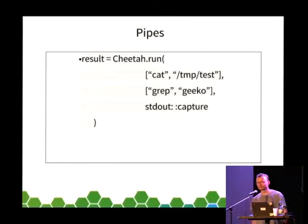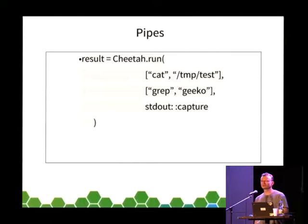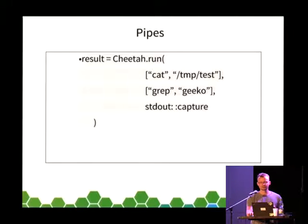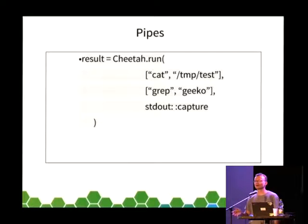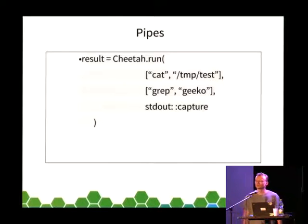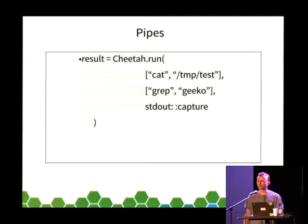Regarding standard error: by default we have logging, which I'll talk about on the next slide, so standard error is logged. If you don't want to capture it, it's not written to your return value. But if you would like it, you can pass a standard error capture option, and then it returns a tuple — two elements — so you write `result, error = Cheetah.run(...)` and it will return the error output. By default we log the outputs.